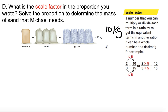So what do we say? Each bag here is 10 kilograms. So basically, the scale factor for this equation is 10. So the question was, solve the proportion to determine the mass of sand that Michael needs. So there's three. So there's three here. Alright. One, two, three.